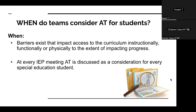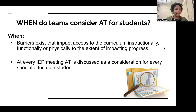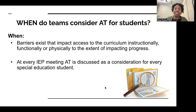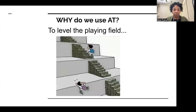When do teams consider assistive technology? Typically when barriers exist that impact a student's access to the curriculum. If a student is excelling in all areas and their physical and environmental needs are being met, we typically wouldn't look at AT. But if there's anything we can do to improve their performance and bridge any type of gap or barrier for a student who may need extra support, that's when we come to the table and consider AT — and as mentioned, it's considered as part of a child's annual IEP.